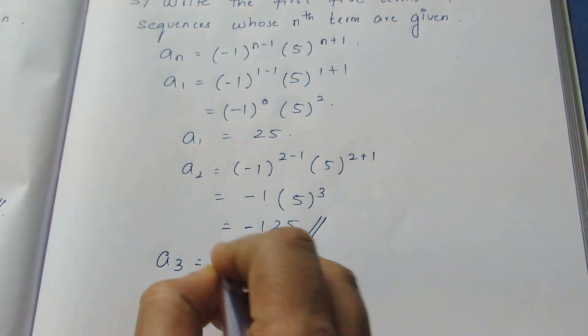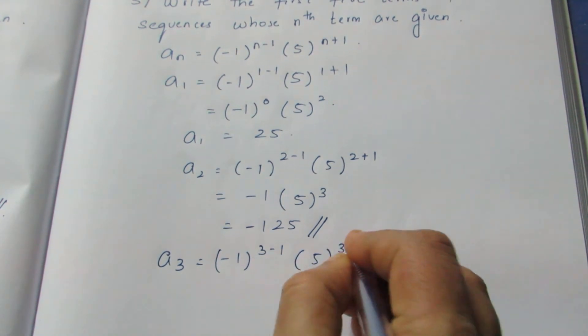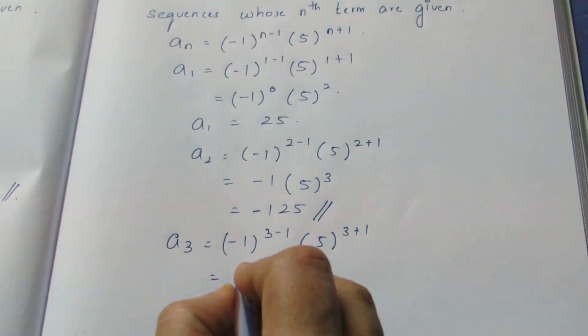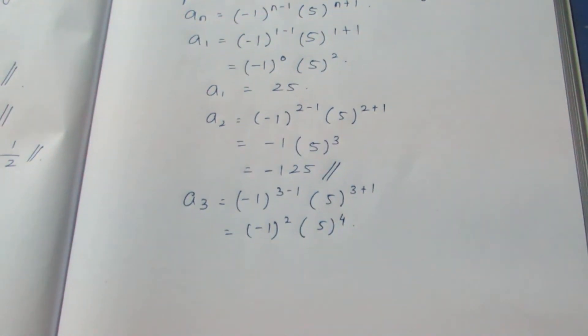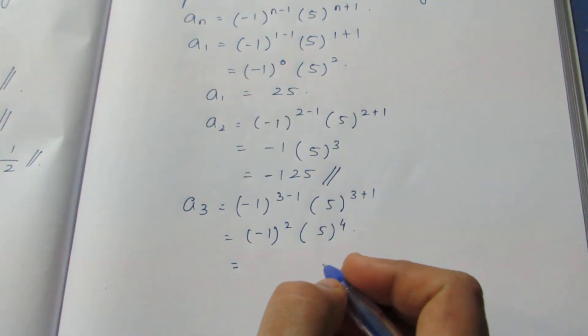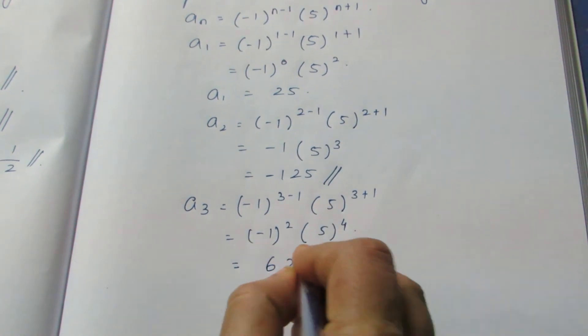a_3: (-1)^(3-1) times 5^(3+1). Here (-1)^2 into 5^4. Minus 1 square will become plus 1. So this becomes 625.